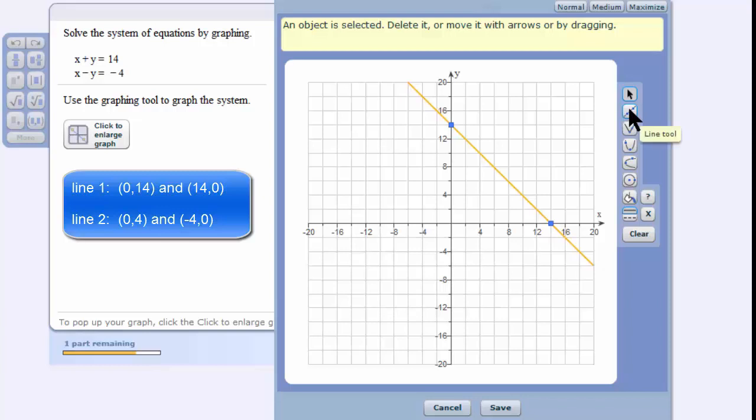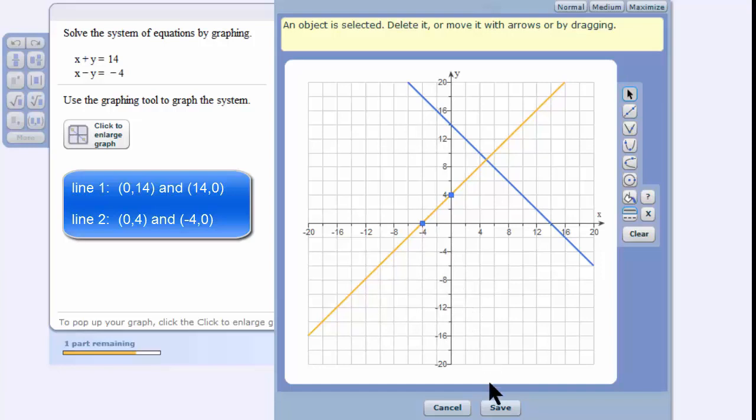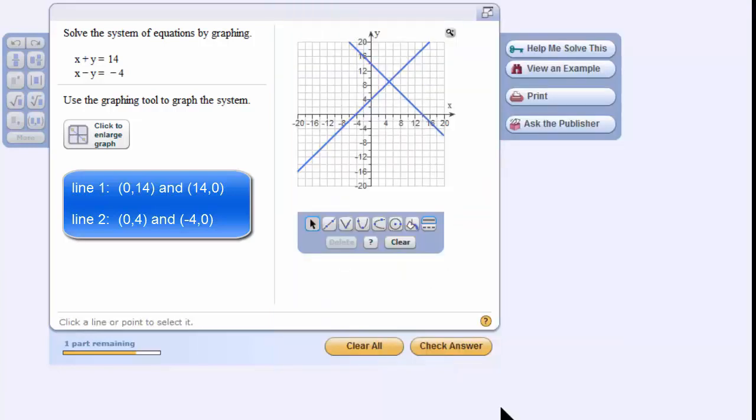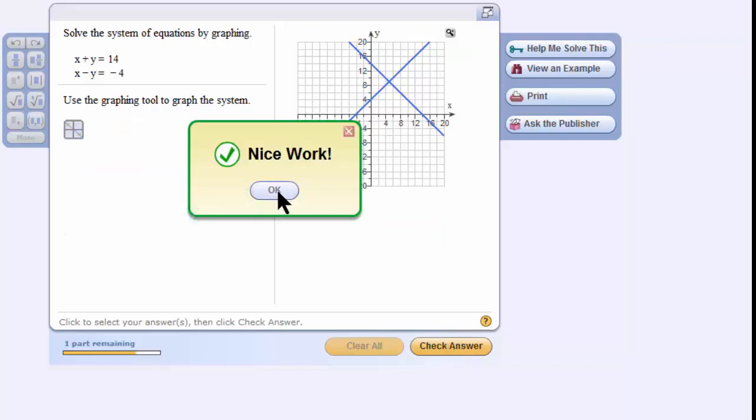Now I'm going to click on the line tool again because I have two lines. I'm going to plot the points (0,4) and (-4,0). And I'm going to save. Now all that's left for me to do is see if I've got the right answer. I'm going to check answer. And it's good.